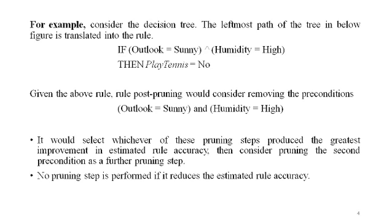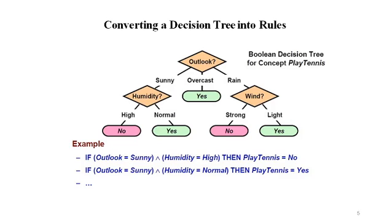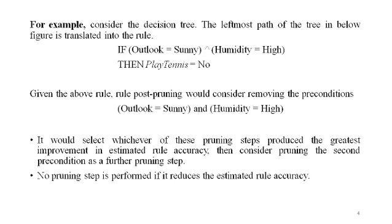To illustrate this, consider the decision tree shown. In rule post pruning, one rule is generated for each leaf node in the tree. Each attribute test along the path from root to the leaf becomes a rule antecedent — that is, a precondition — and the classification at the leaf node becomes the rule postcondition.